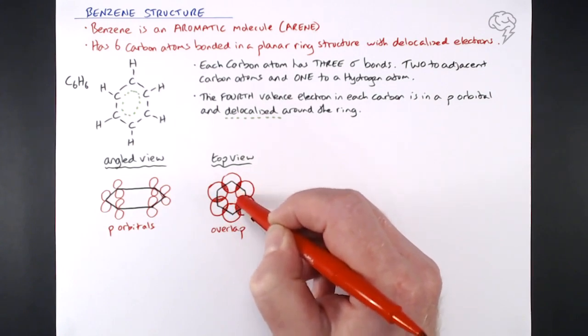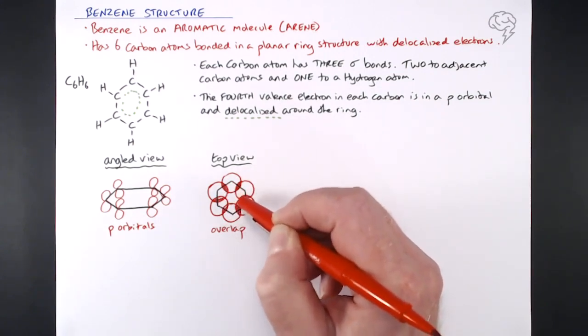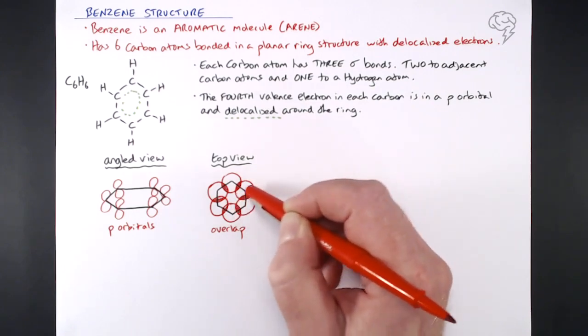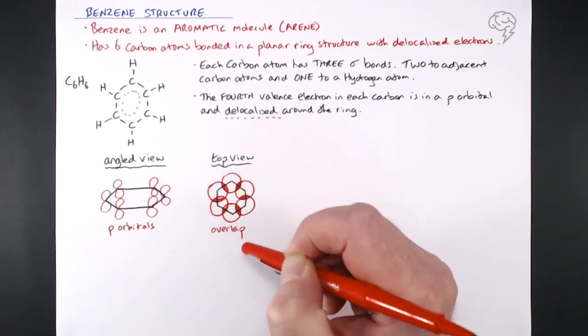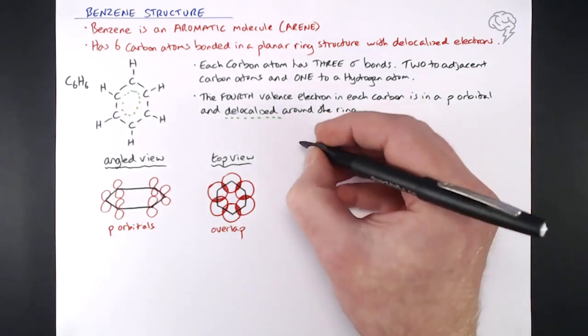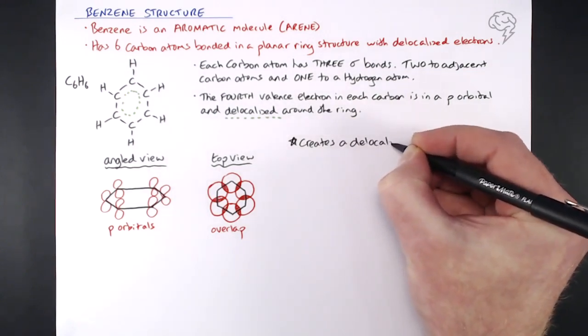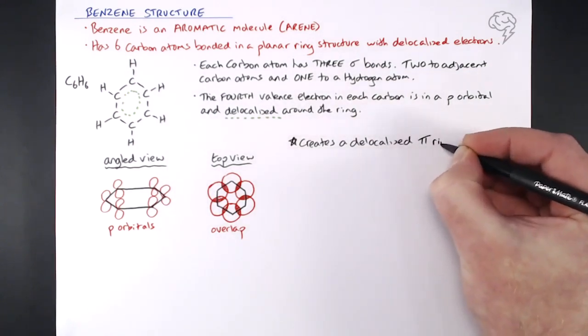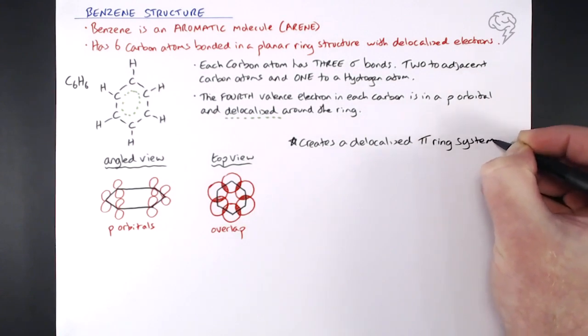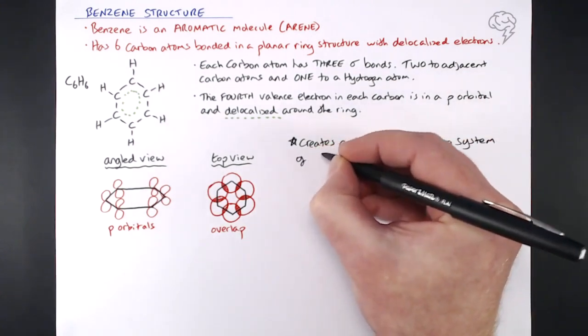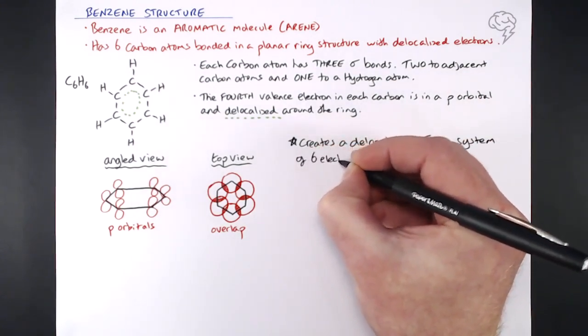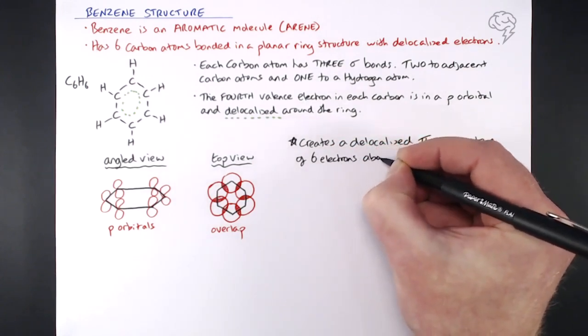Now if we take another view here, we can see the overlaps from a different view, and it gives us an idea as to why this benzene ring undergoes some of the reactions that it does. So as I said, what's happening here is that we've created a delocalized pi ring system. Pi because they're all p orbitals overlapping, creating pi bonds essentially, but it's a pi ring system of delocalized electrons, and there are six of them.